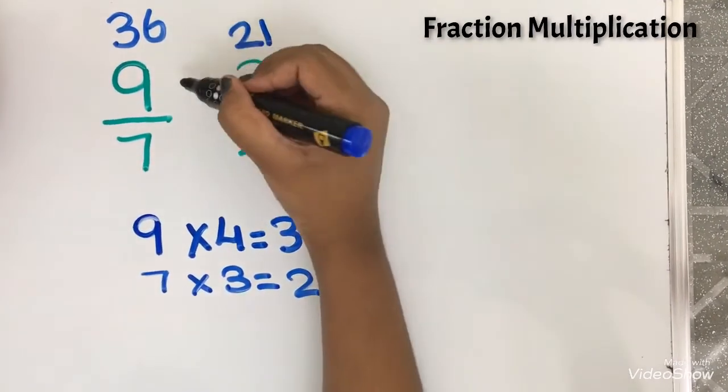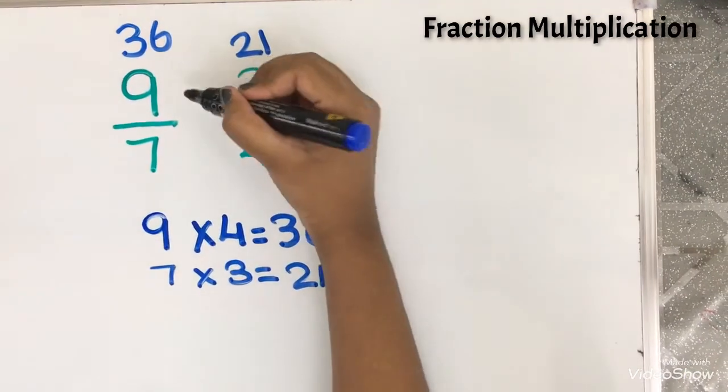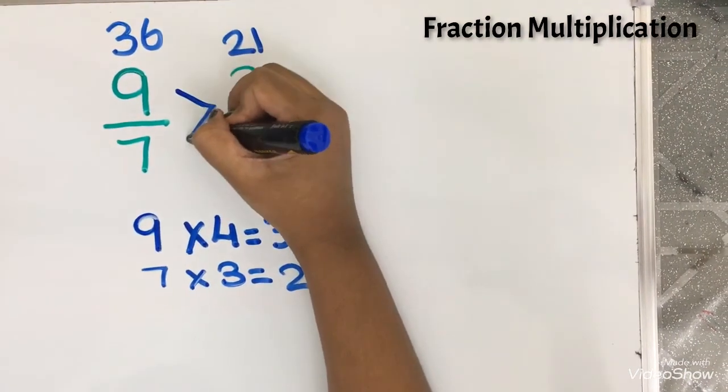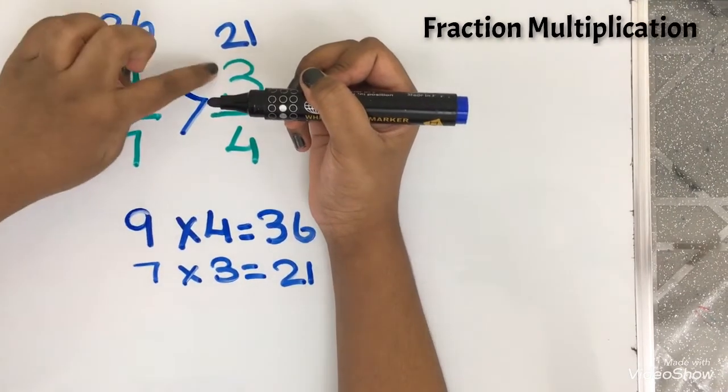So which is bigger? 36. So now I am going to write the greater than sign. So 9 by 7 is greater than 3 by 4.